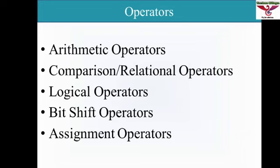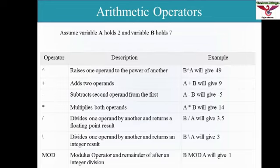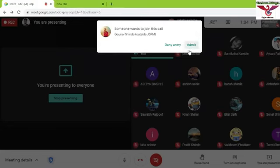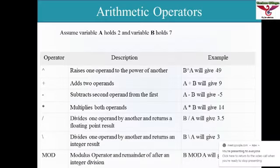Here are some examples of arithmetic operators: the power-of operator, addition, subtraction, multiplication, and division. In the division operator there are two ways — if you want a floating point or double value then you use the forward slash, and if you want an integer value then you use the backward slash.